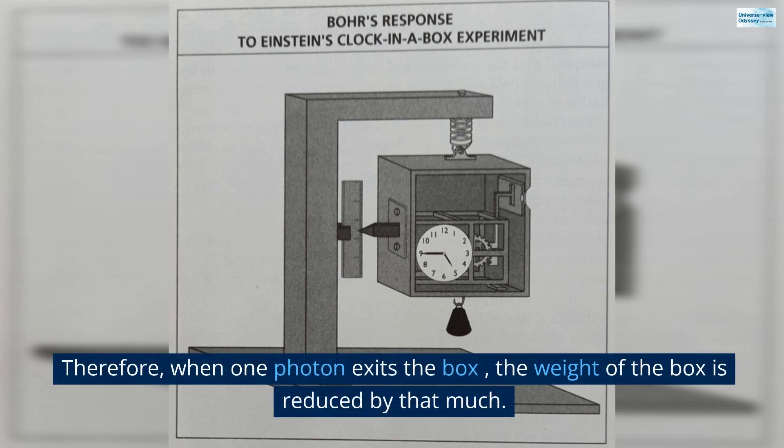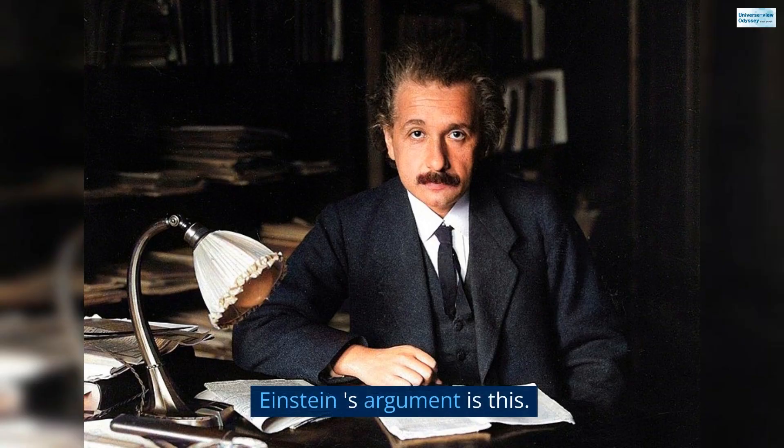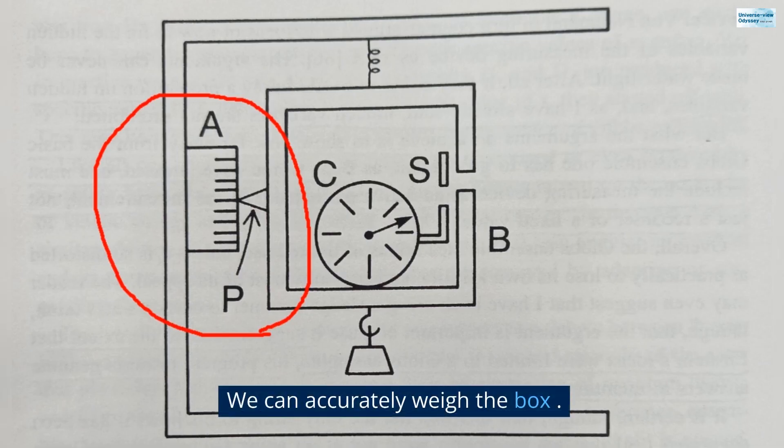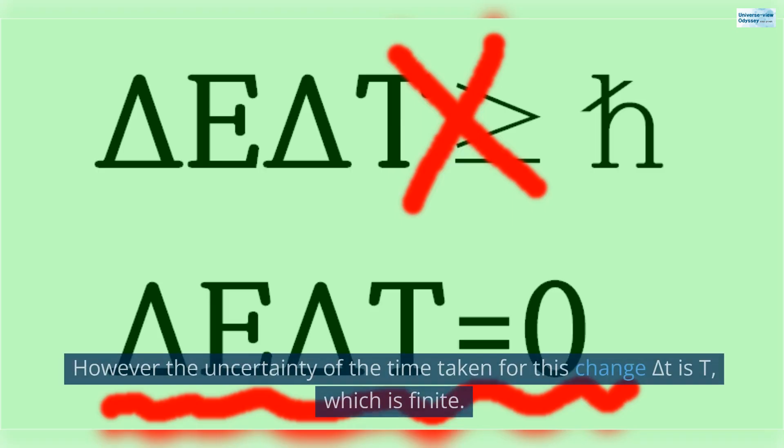Therefore, when one photon exits the box, the weight of the box is reduced by that much. Einstein's argument is this: We can accurately weigh the box. Therefore, the box's mass, or energy uncertainty delta E, is zero. However, the uncertainty of the time taken for this change delta T is T, which is finite.